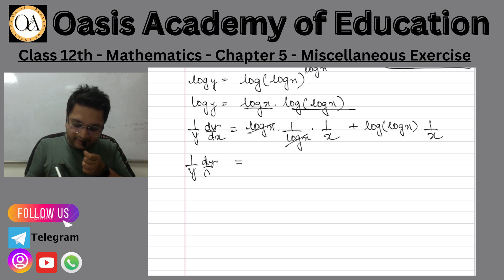Then what will happen here? 1 upon y dy by dx, 1 upon x plus log log x upon x.